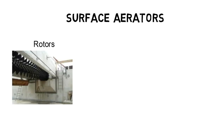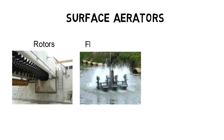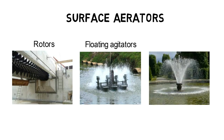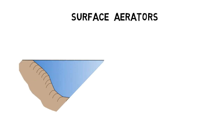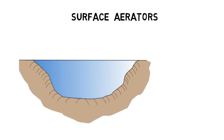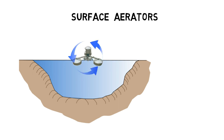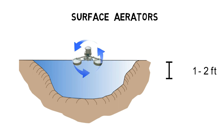Examples of surface aerators are rotors, floating aerators, agitators, fountains, and others. They all have in common that they extract water from the first one to two feet of the water body and utilize air-water contact to transfer oxygen.